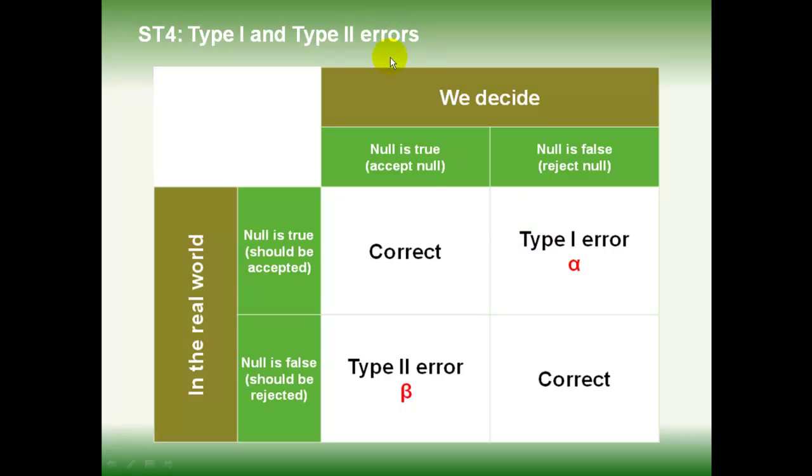The problem with statistical tests is they never tell us exactly the right answer. They give us some information which we use to make a decision. In the real world, the null might be true or the null hypothesis might be false. And as you work through the readings, you'll get a better idea of what the null hypothesis is. If the null is actually true and we decide that it is true, we've made a correct decision. If we decide it's false, however, we've made an error. We've said that something is going on when in fact it isn't. Statisticians call that a type 1 error.